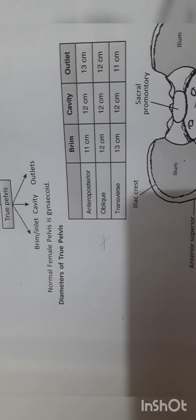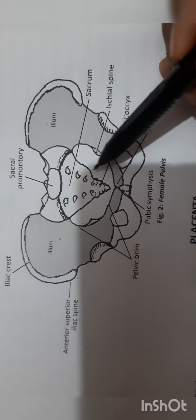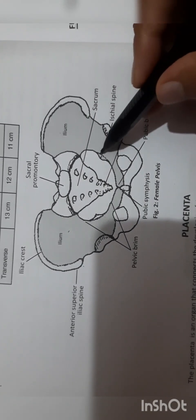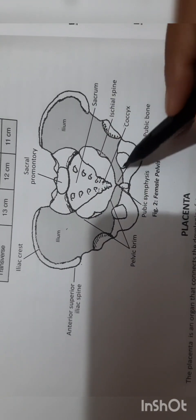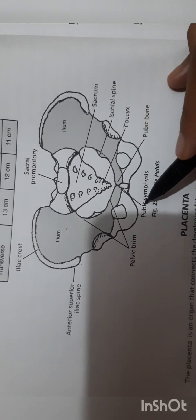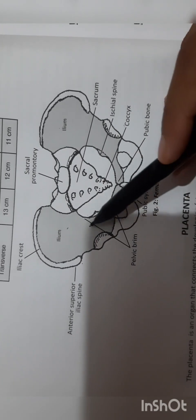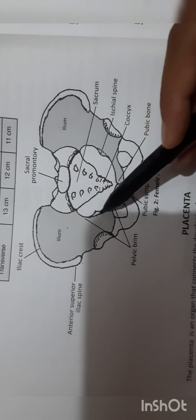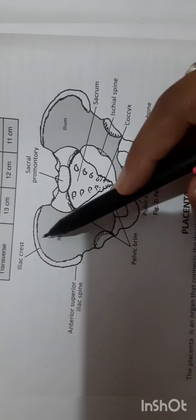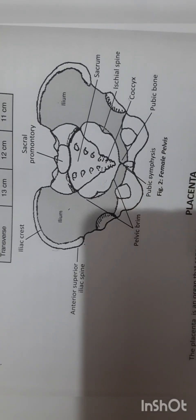Transverse is opposite of anterior-posterior: 13, 12, and 11. Now there is a diagram of the female pelvis. This is the sacrum and this is the coccyx. The pelvis — the left side is called ileum. There is the ischial spine, which is cone shaped. This is the pelvic brim. This is the anterior superior iliac spine — anterior means front, superior means upper side. This is our pelvic brim.